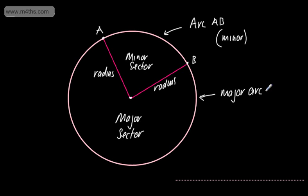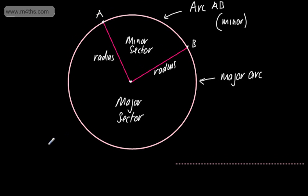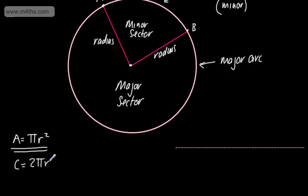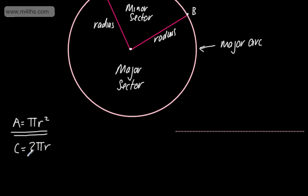In the video, we're going to look at finding an arc length and also the area of a sector. Before we go there, we need to know how to find the area of a circle and the circumference of a circle. The area of a circle is given as pi multiplied by r squared, where r is the radius. The circumference is given as 2πr — if I want the distance around the outside, I multiply 2 by pi by the radius. These are the two formulae we need to know.